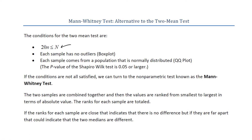Also, each sample has no outliers, which we check with a box plot, and each sample comes from a population that is normally distributed. We can check that with the QQ plot, but instead we've been asking StatCrunch to perform the Shapiro-Wilk test, and if the p-value for that is 0.05 or larger, that means that the data are normally distributed.